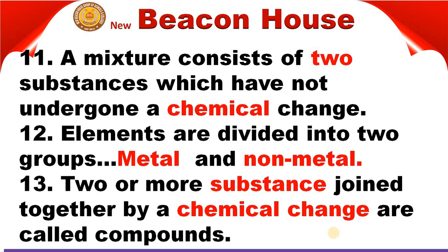A mixture consists of Dash substances which have not undergone a Dash change. जब भी mixture बनाएंगे तो उसके नतीजे में हमारे पास substance बनेगा जो दो या दो से ज़्यादा substances से मिलकर बनेगा, और उसमें chemical change नहीं आएगा। तो answer है: A mixture consists of two or more substances which have not undergone a chemical change.